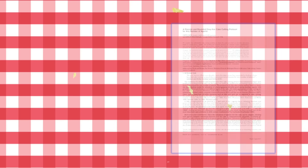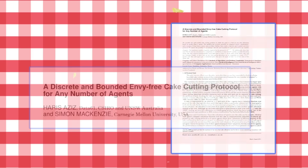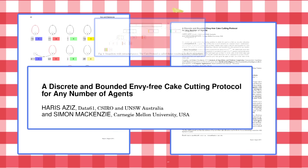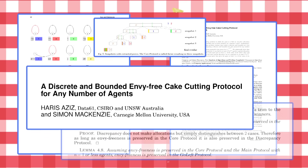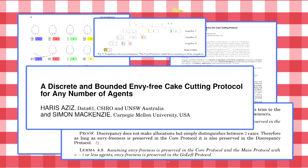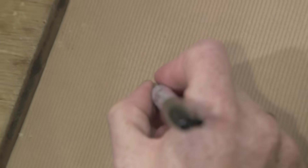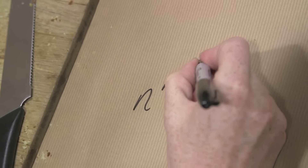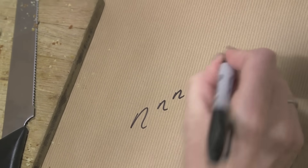There is actually an n-person version of this algorithm. The only thing is the number of cuts that it takes to get this envy-free solution gets a bit bonkers — trimmings of trimmings of trimmings. In general, the number of cuts it takes to divide a cake between n people fairly is n to the n to the n to the n to the n to the n. Which is kind of bonkers.